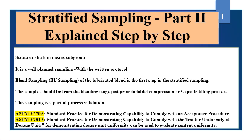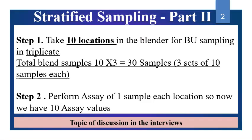Whatever products are being made and filed to regulatory authorities, all those products should go through the validation process. Stratified Sampling is the core requirement of process validation for tablets and capsules. ASTM E2709 and ASTM E2810 are the basic guidelines for Stratified Sampling, which gives confidence for meeting USP Content Uniformity requirements. Stratified Sampling starts with BU sampling, taking 10 locations in the blender, done in triplicate, giving 30 total blend samples.